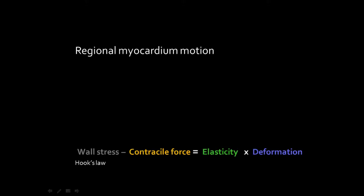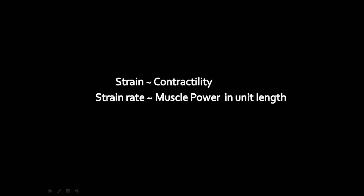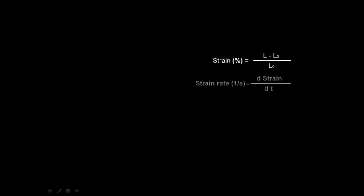Regional myocardium can be described by Hooke's law. The sum of the forces driving deformation includes wall stress — meaning blood volume and cavity pressure — neighboring myocardium-segment interaction, and most importantly, myocardial contractility and tissue recoilability. According to Hooke's law, strain represents myocardial contractility, and regional myocardium deformation is evaluated by strain and strain rate.